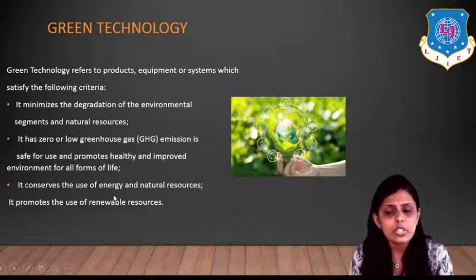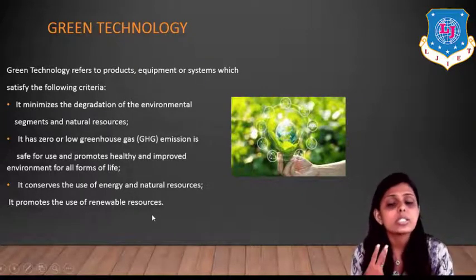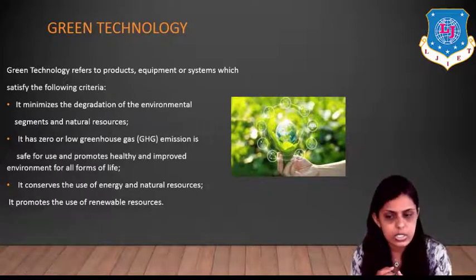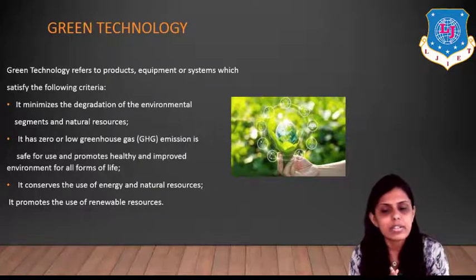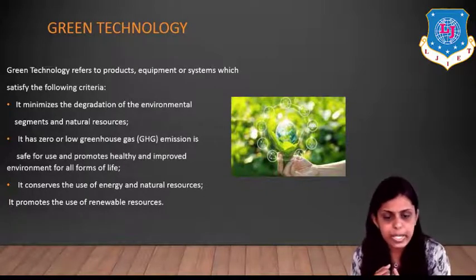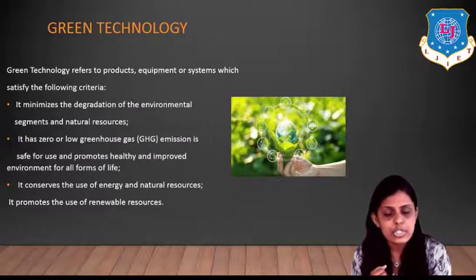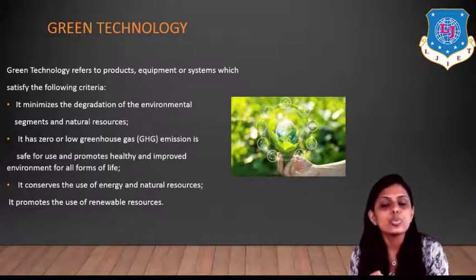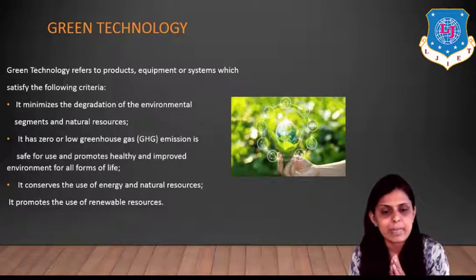The third criterion is that you should maximize the use of renewable resources and conserve energy and natural resources. So to summarize: the first criterion is minimum harm to the environment; the second is low or zero greenhouse gas emissions; and the third is use of renewable resources.